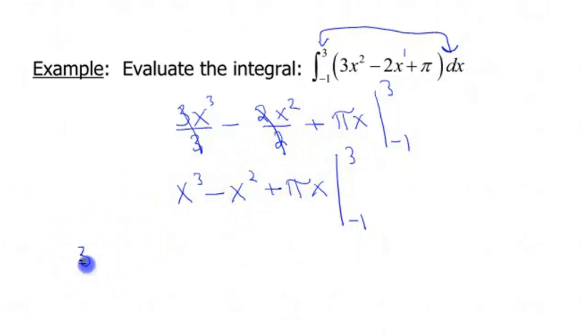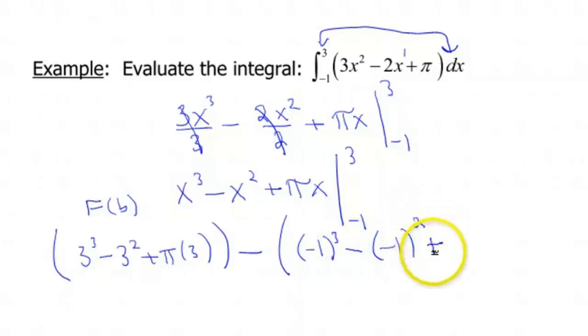Plugging in our numbers, then. So we're going to have 3 cubed minus 3 squared plus pi times 3. That's going to be our F of b, basically. So this is the antiderivative evaluated at our top endpoint. Minus, we definitely got to watch our negatives on this one. So I'm going to do negative 1 cubed minus negative 1 squared, and then plus pi times negative 1. So this big quantity here is my big F of a. So that's my antiderivative evaluated at my bottom endpoint of negative 1.